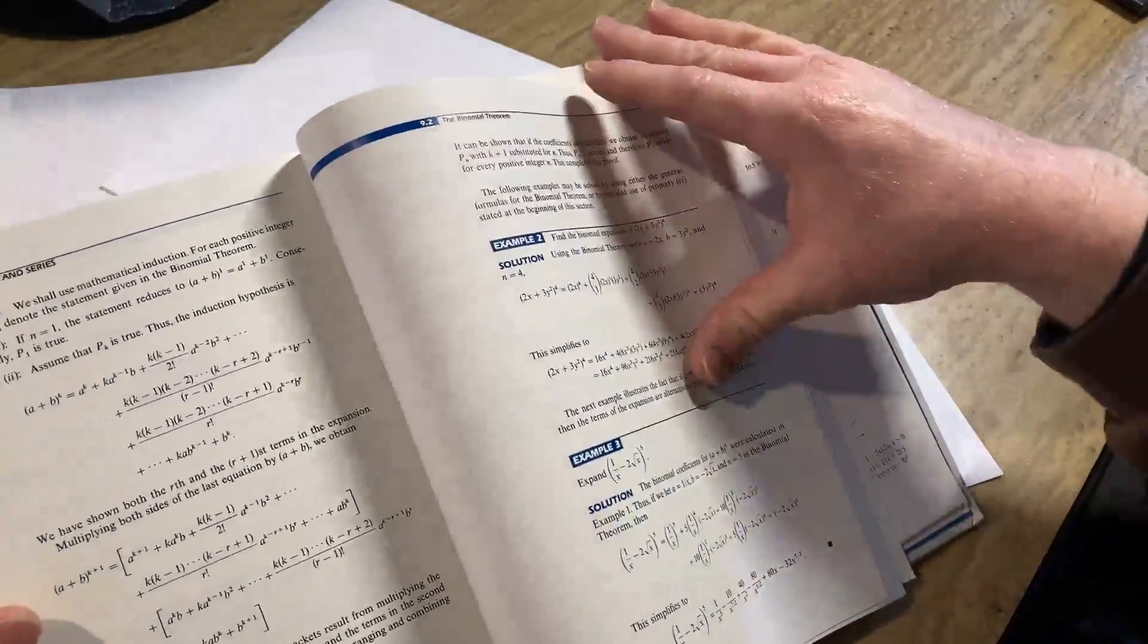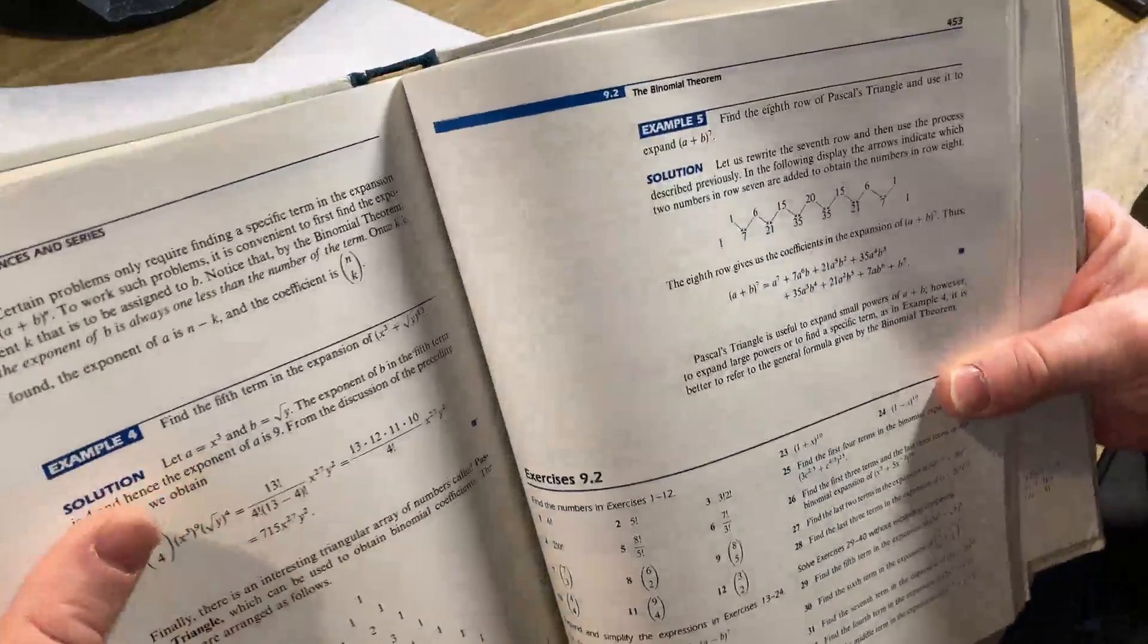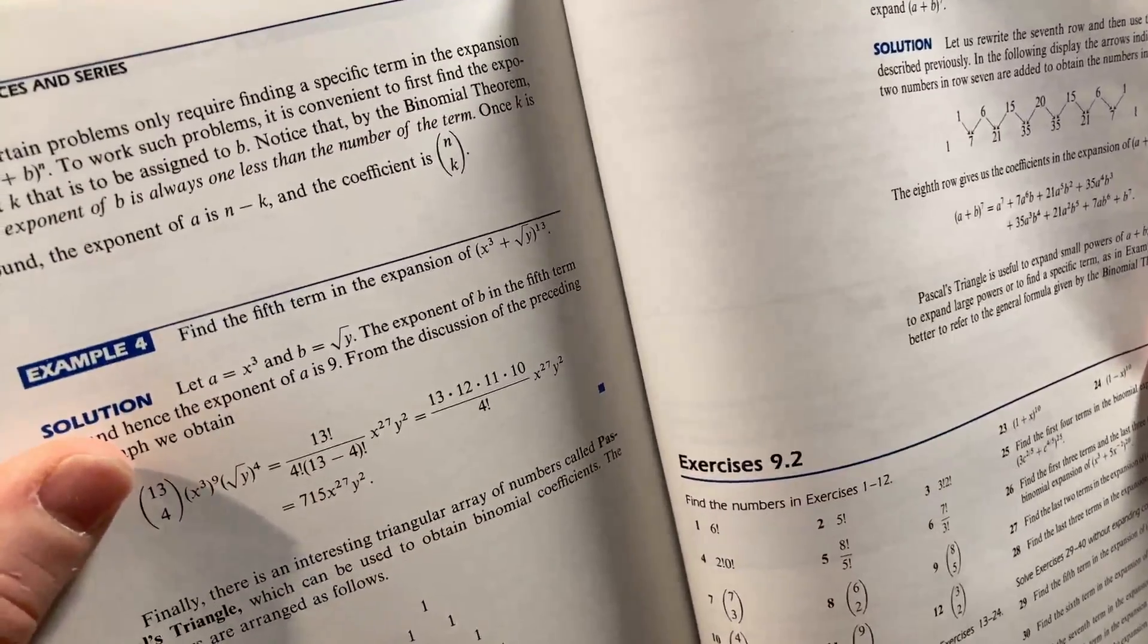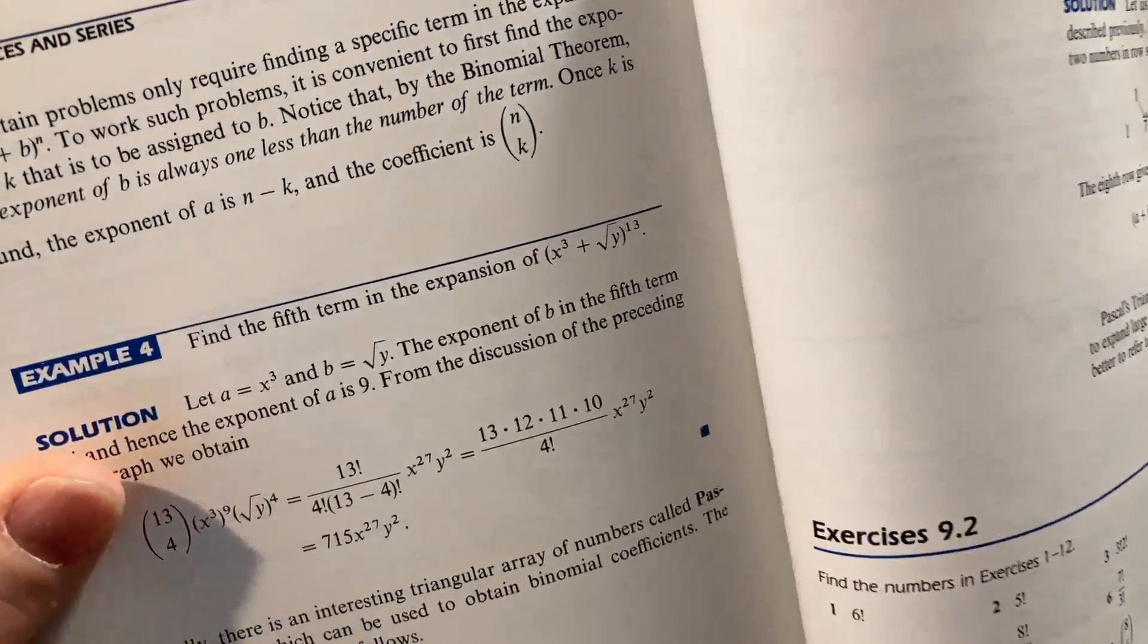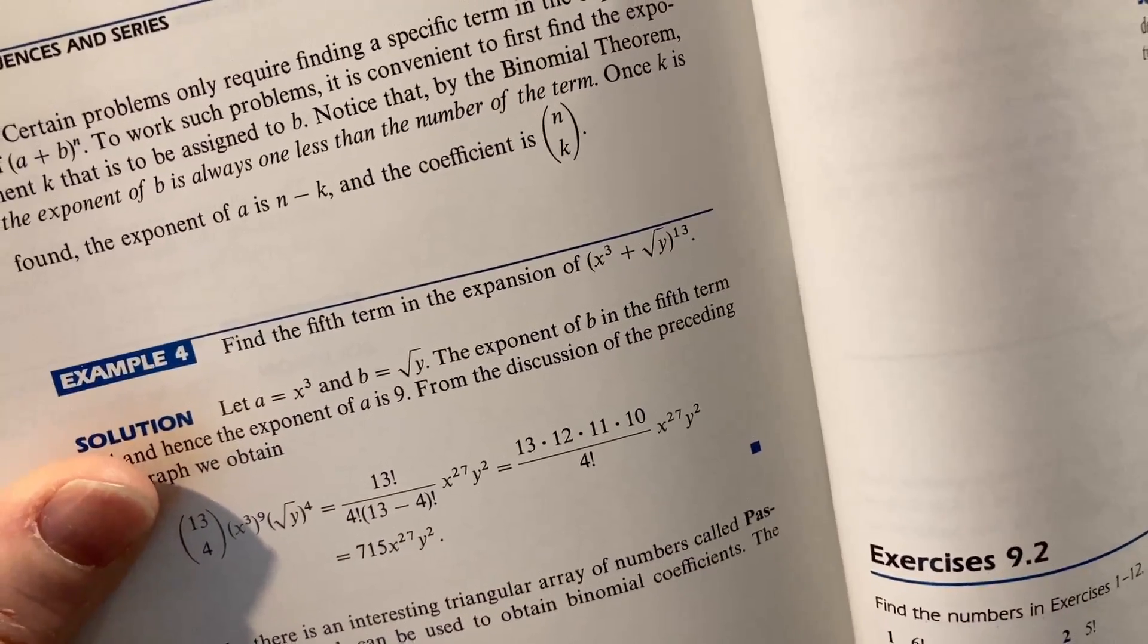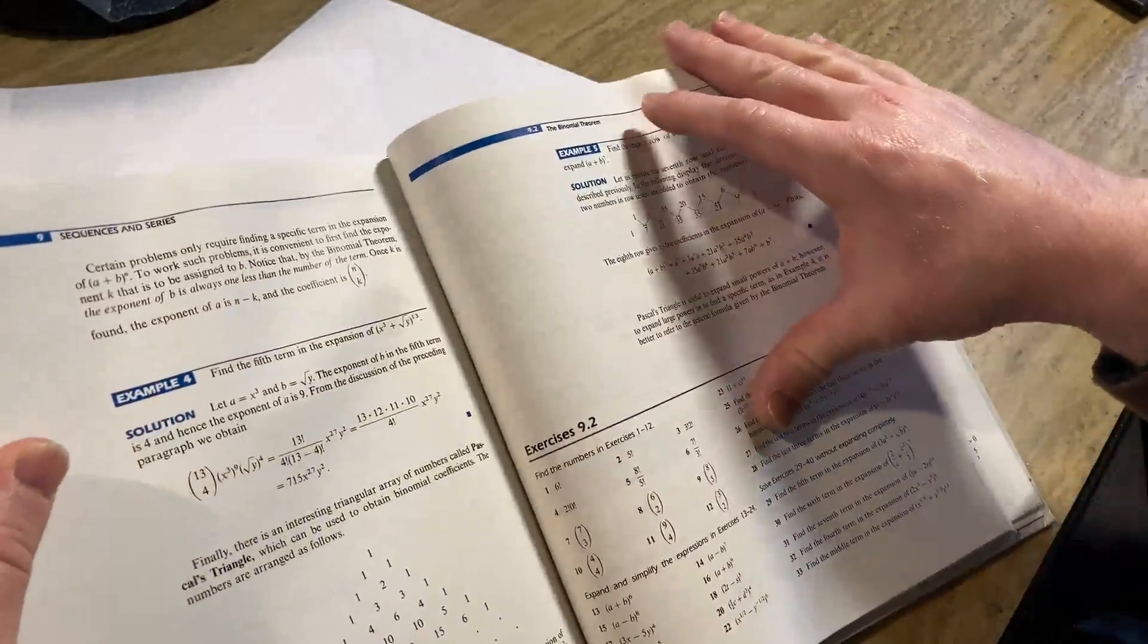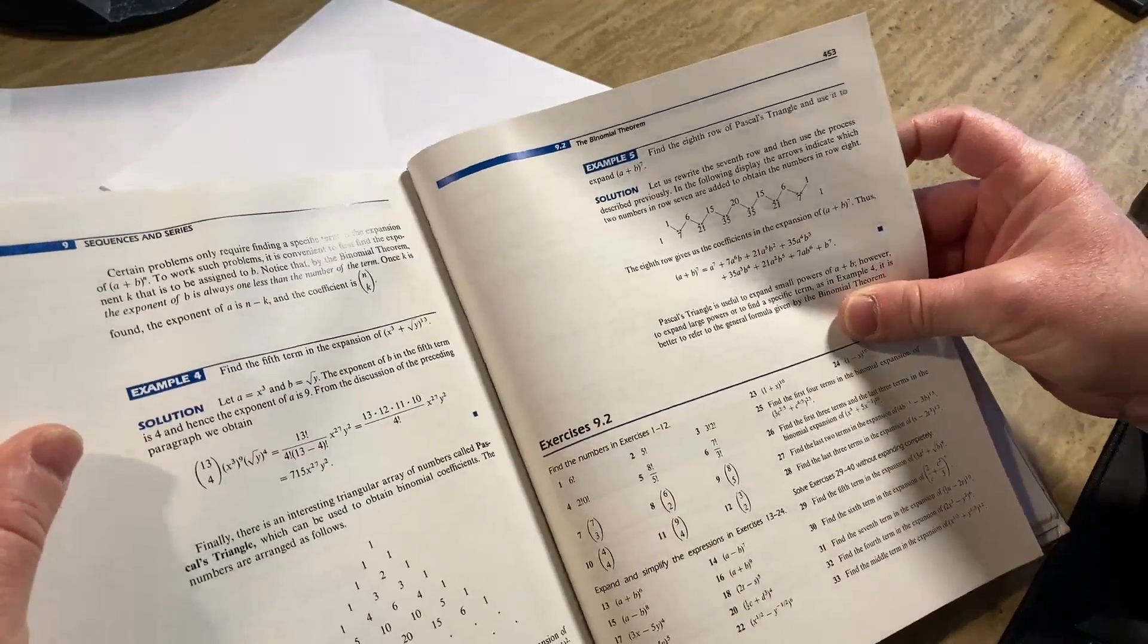That's something you learn in pre-calc. You learn in pre-calc expanding using the binomial theorem. Also finding specific terms. I find the fifth term in the expansion of (x cubed plus the square root of y), and that whole thing is to the 13th power. So that's something you would also learn in pre-calc. So this book has a lot of exercises, as you can see.